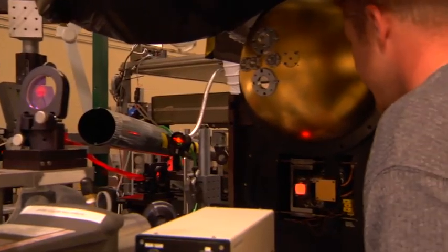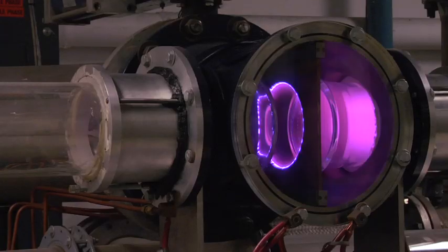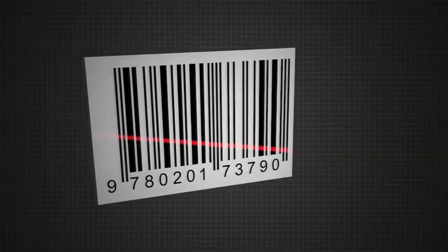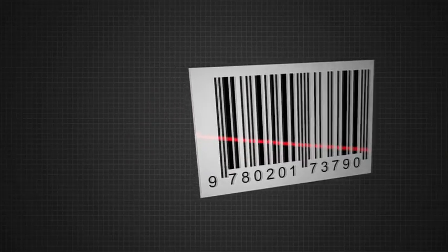Lasers are all around us. We can find them everywhere. In the military, we use them for such things as targeting and simple things as laser pointers. In everyday life, they're at supermarkets, in barcode scanners, in CD and DVD players.